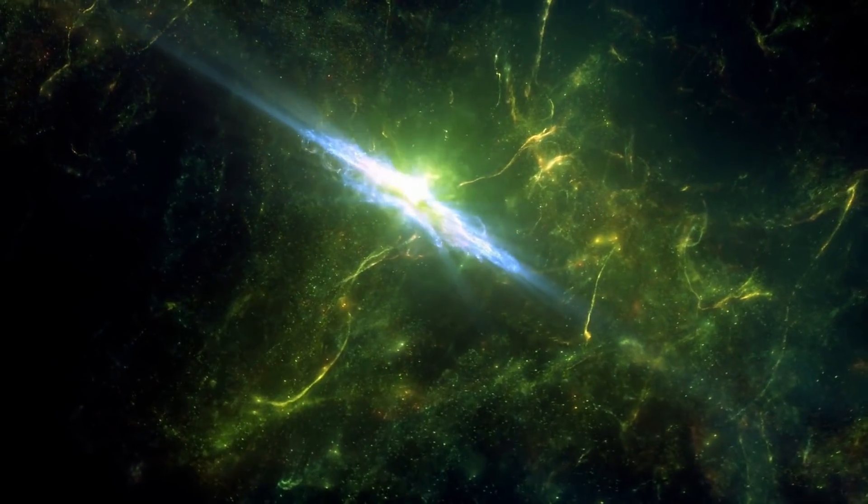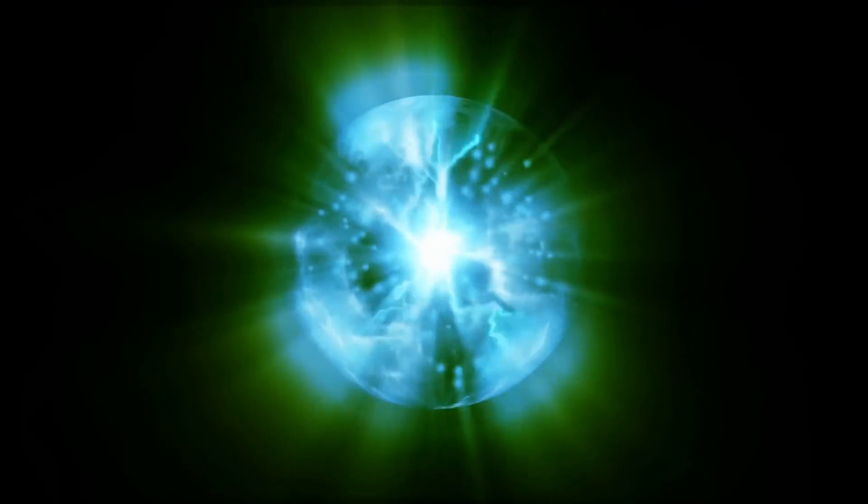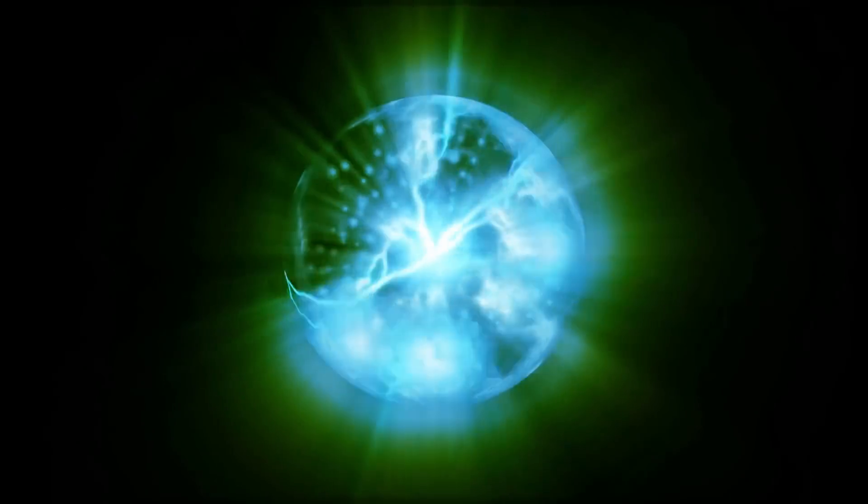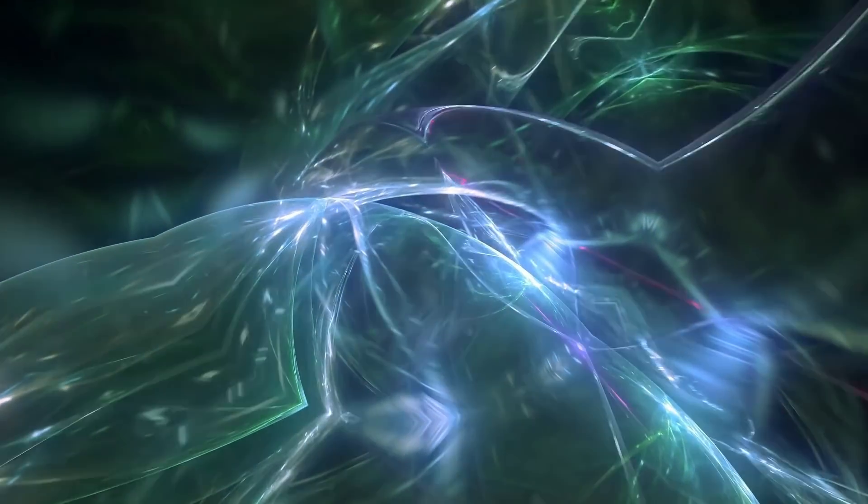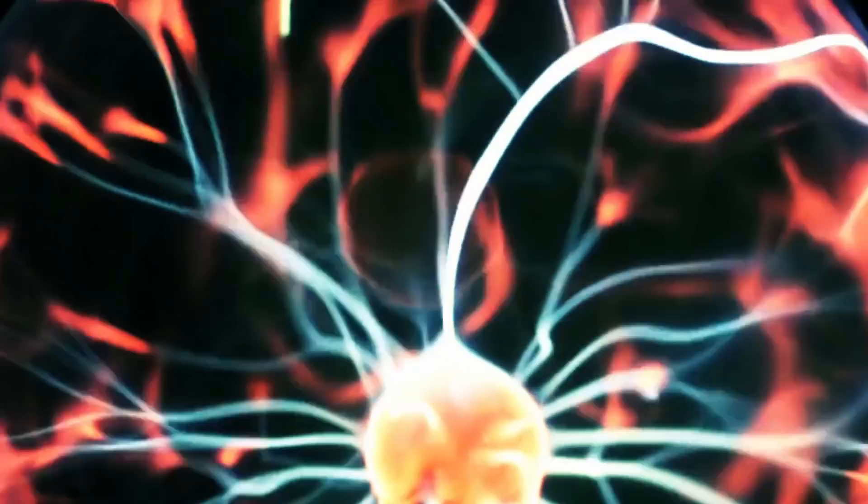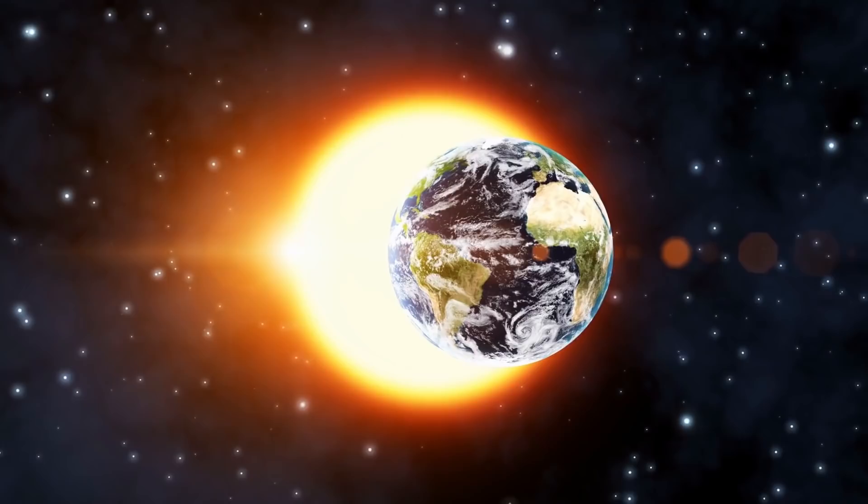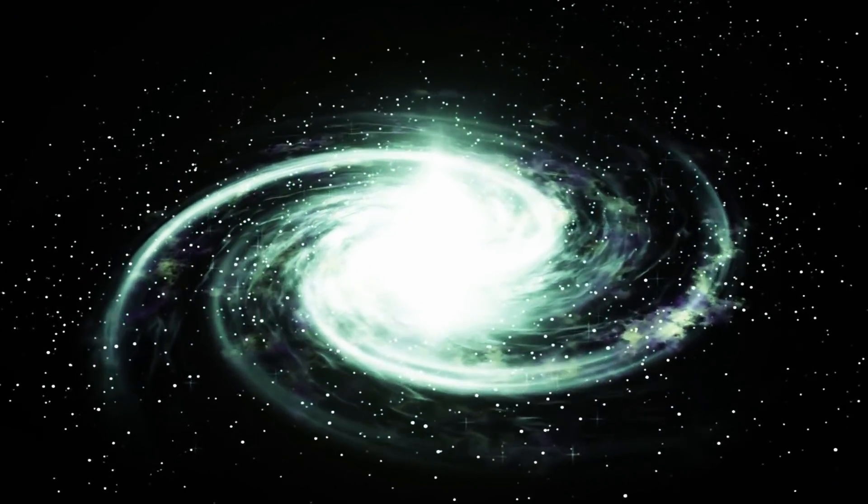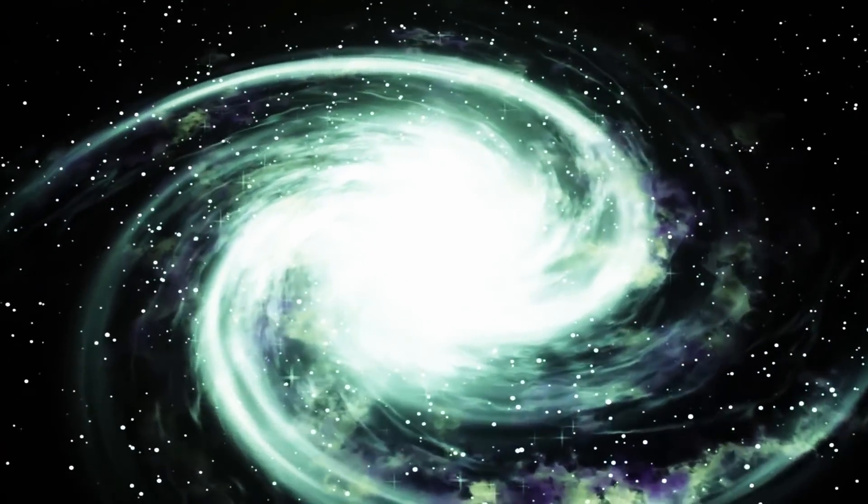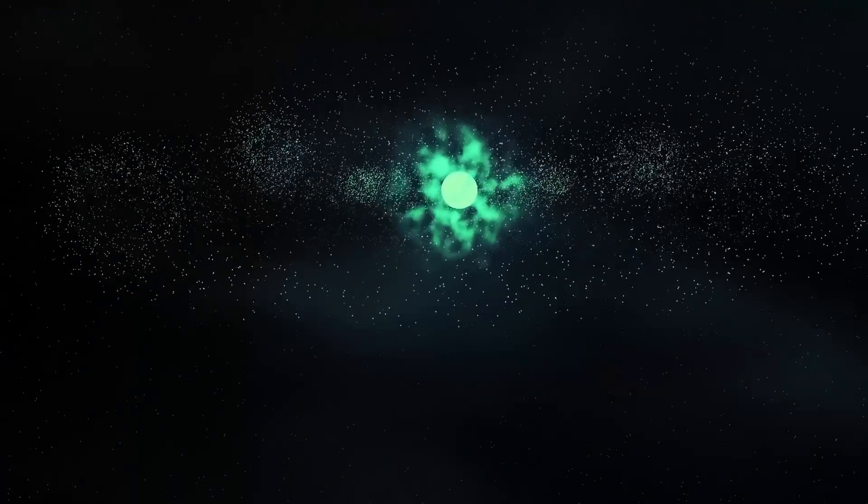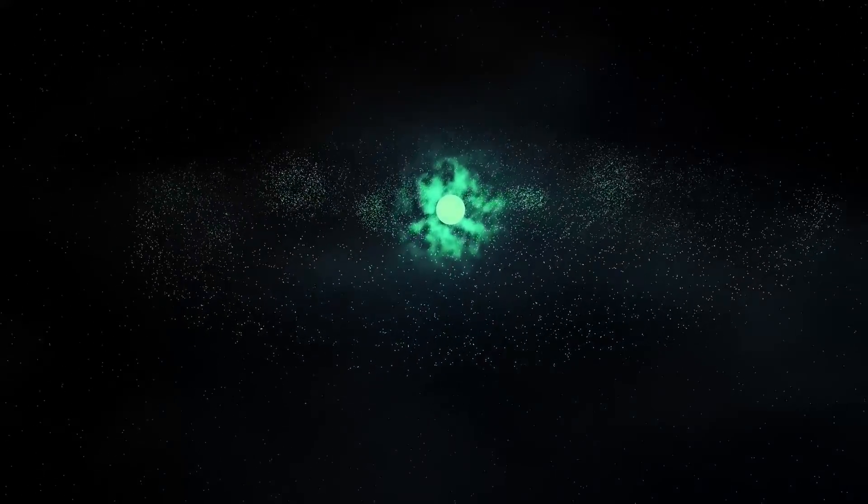So why does it look so unsettling? Well, the neutron star is spinning rapidly and producing a deadly magnetic field generating one trillion volts. The star actually has the same mass as our sun, but is pushed and squeezed into an ultra-dense sphere, which is only a few miles across and is 100 billion times stronger than steel.